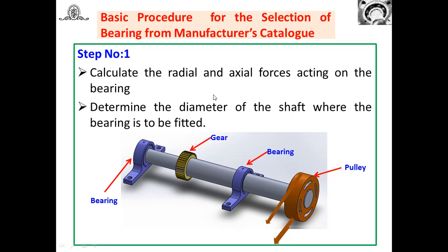There are different steps involved. The first step, while selecting the Deep Groove Ball Bearing, is to calculate the radial and axial forces acting on the bearing. Based on the type of load acting on the bearing, bearings are classified as radial load bearings and axial load bearings. Before deciding this, we have to determine or calculate the radial and axial forces acting on the bearing. Once you have the radial and axial forces, the next important step is to determine the shaft diameter.